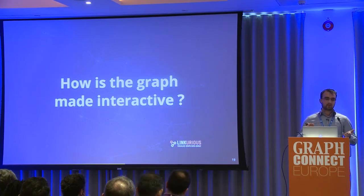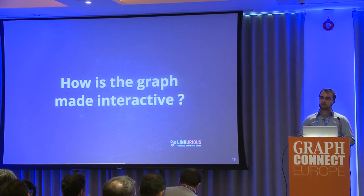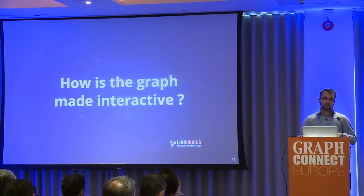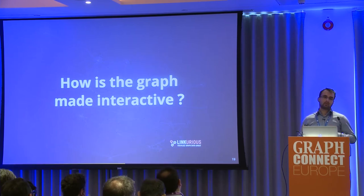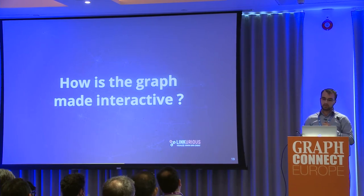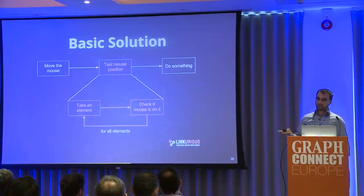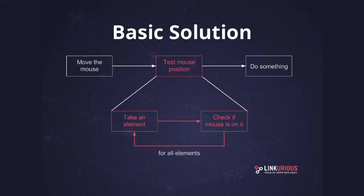So how is this graph made interactive? The main problem with Canvas and WebGL is something very basic: you have your mouse somewhere and you've got an object displayed — how do you know your mouse is on that object? The basic solution is: each time you move the mouse, you test the mouse position, take an element, check if the mouse is on it, and do that for all elements. That's the very basic solution. But when you have a lot of elements in the graph, it will take a lot of time.